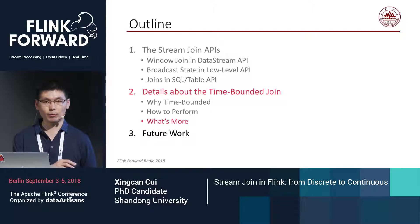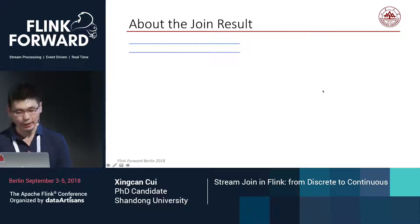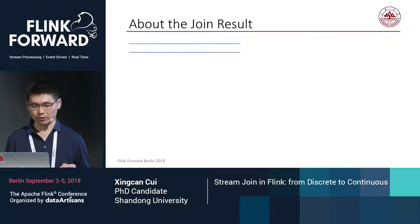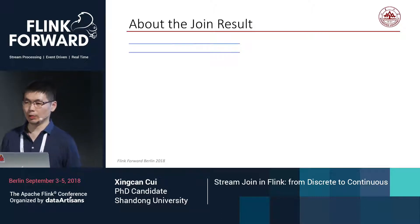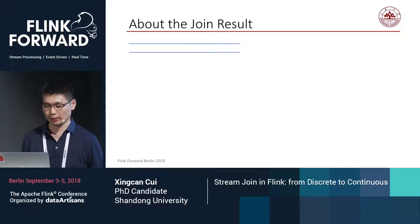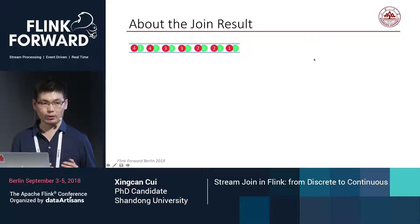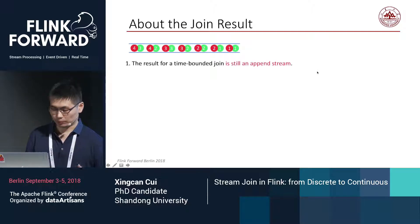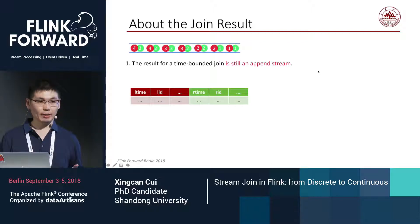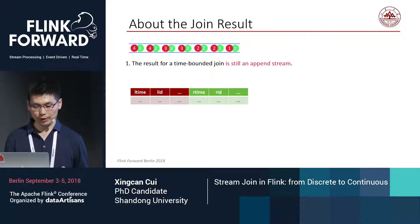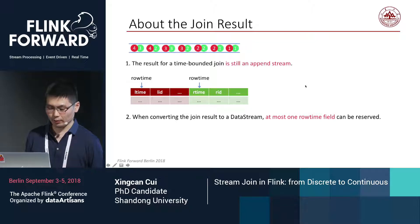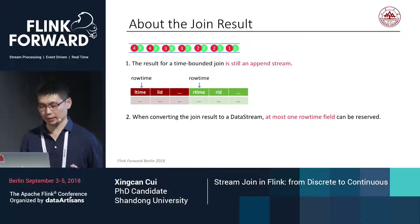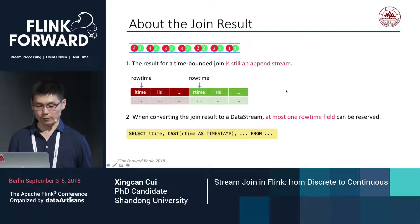There are some important factors to consider with time-bounded join. First, what is the result type? While a group-by operation leads to a table, the result of a time-bounded stream join is still a data stream. When converting the join result to a data stream, you must ensure that only one row-time field is contained in the result row. For other time fields, you can cast them into ordinary timestamp fields using the CAST function.